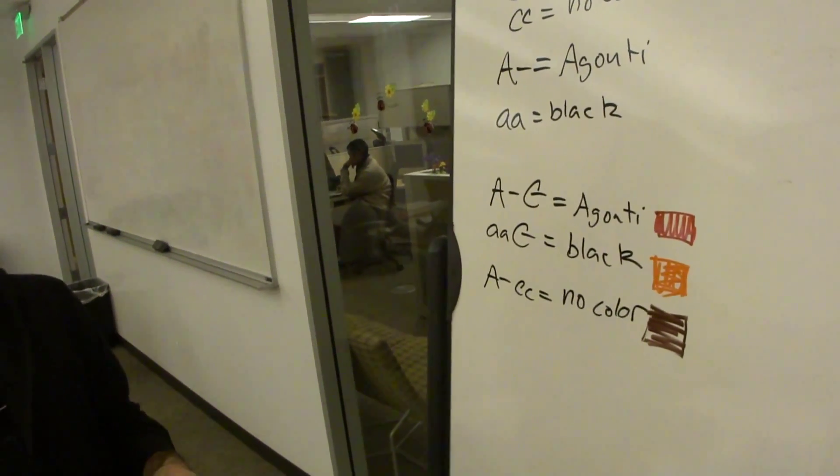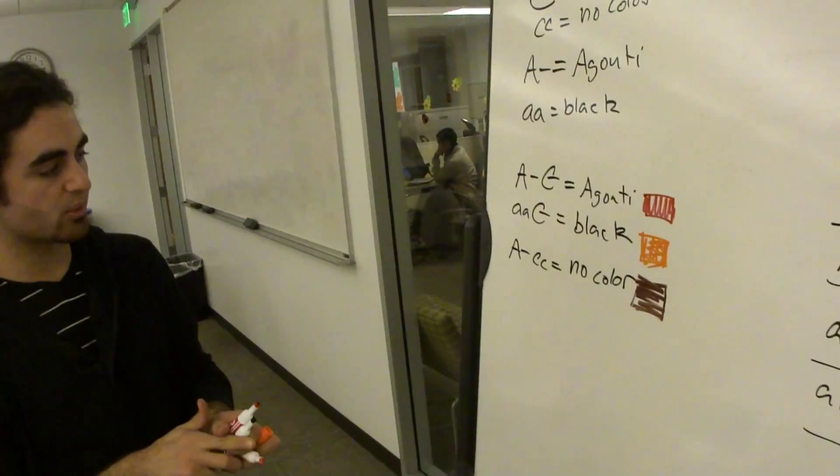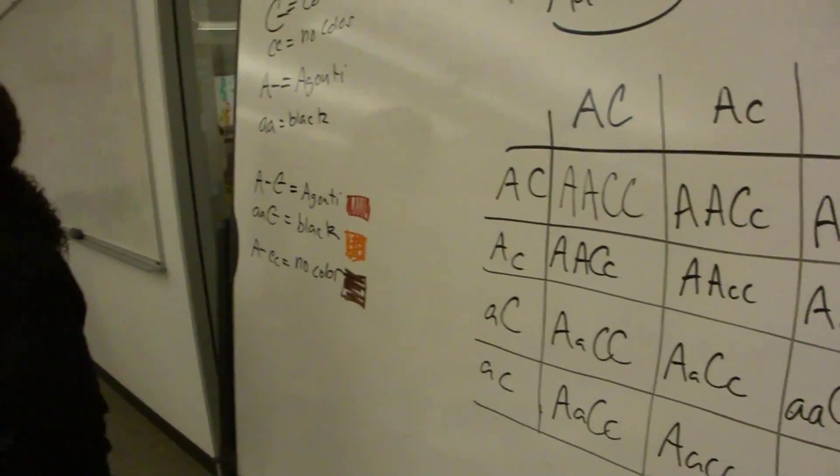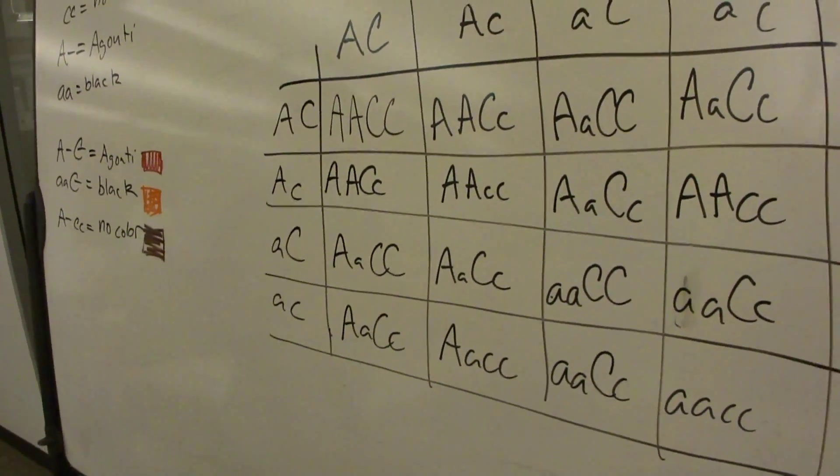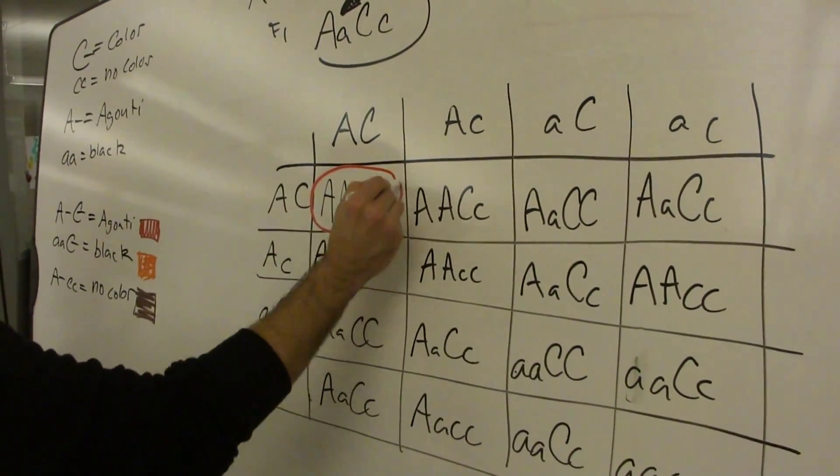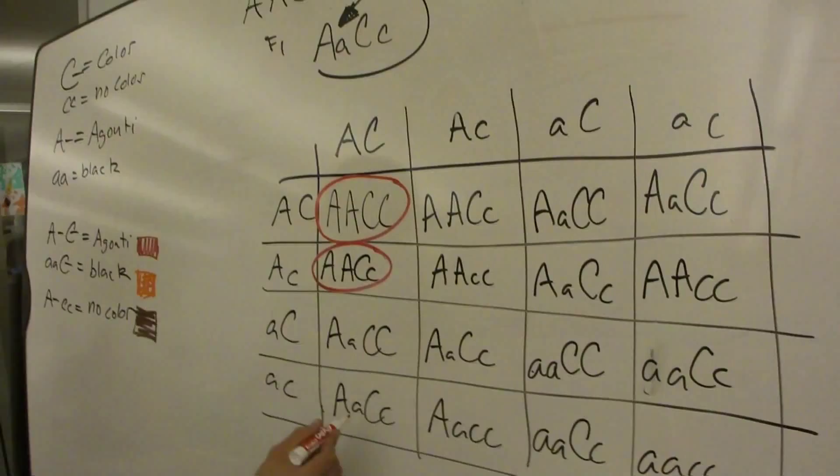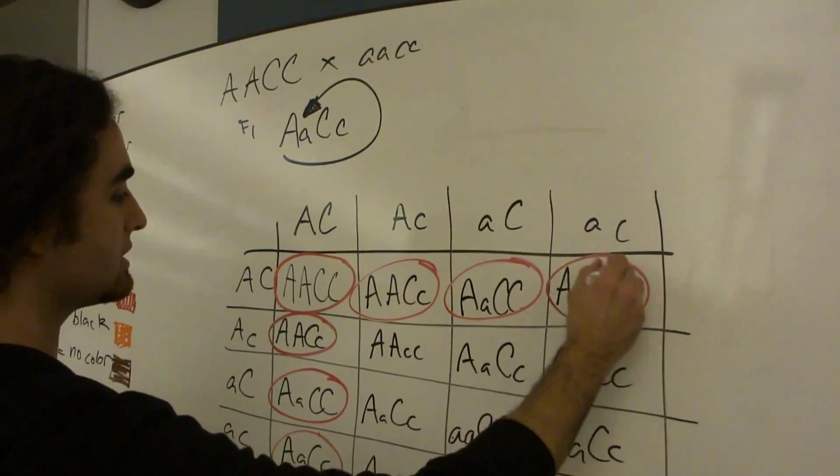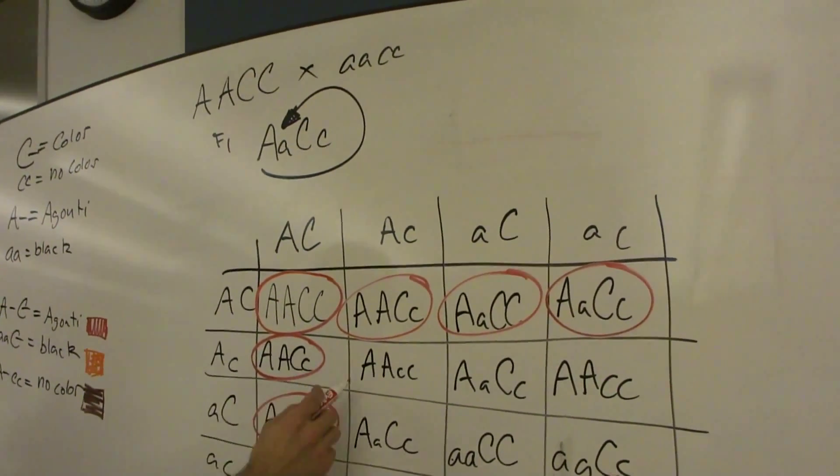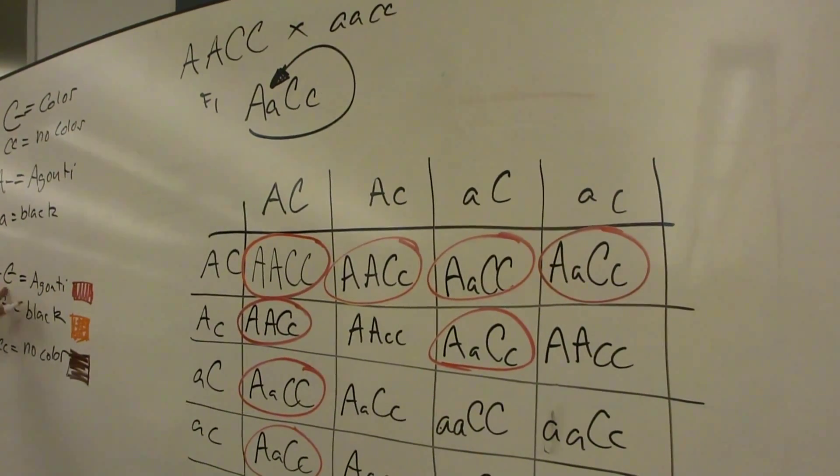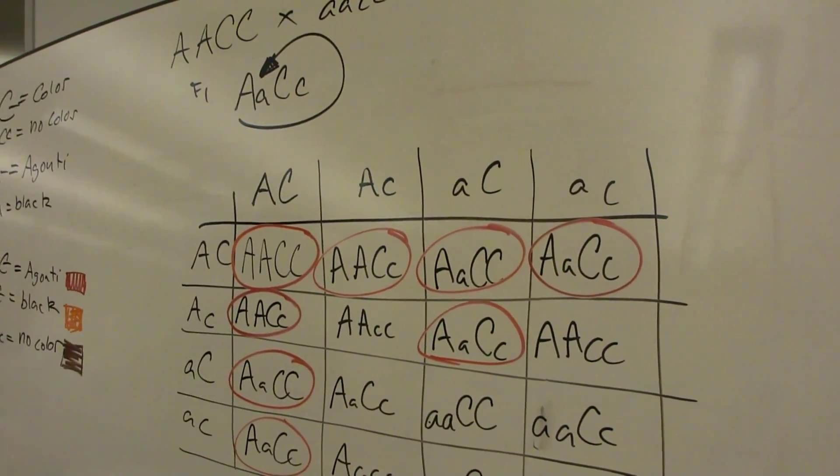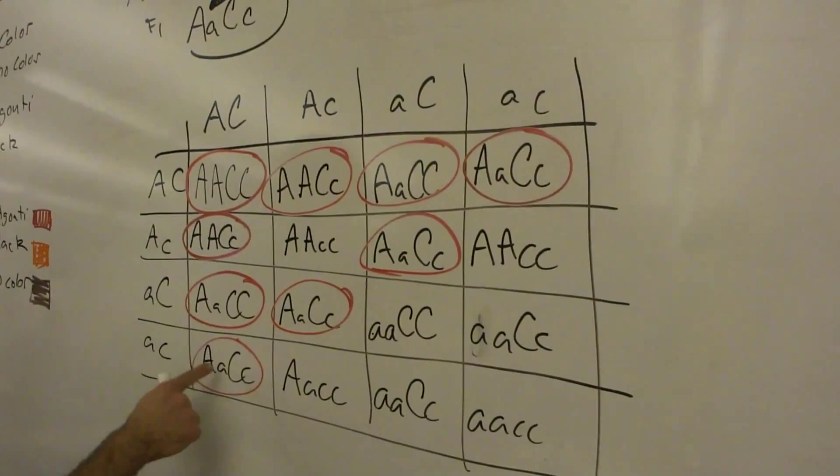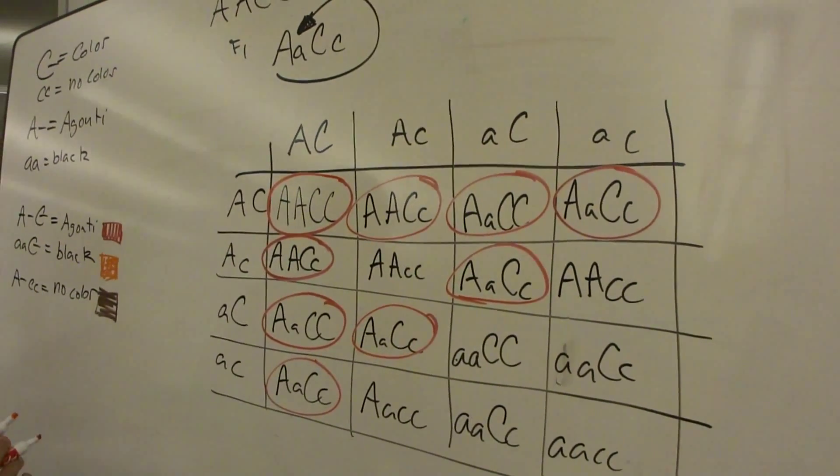Yeah. So we're going to find all of our agouti colored ones and circle them with red. So which ones are agouti? Anybody. Yeah. Top left is agouti. So basically anything with a big A and a big C, right? The whole top row. Yeah. The whole top row? Yeah. Okay. So anything with a big A or a big C. So that's what dash just means unknown, so that means whether it's capital or lowercase. That's what a dash means. Yeah. Okay. It's a placeholder. A dash is a placeholder. Okay. So we got nine of those.